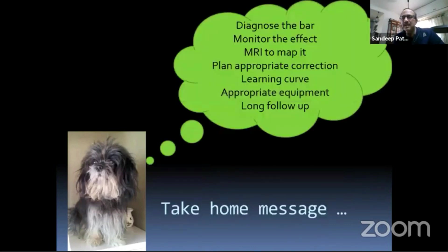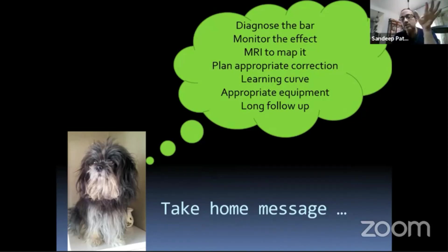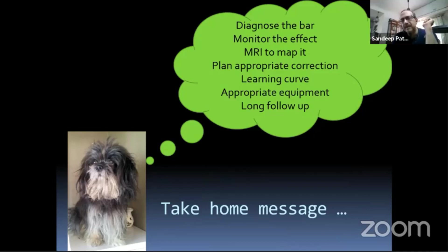The take-home message: know which physeal injury is going to give you a bar; diagnose it, quantify it, and monitor its effect over one to two years to see whether it is causing shortening, tenting, peripheral tethering, change in articular shape, or coronal plane malalignment. Then assess how much growth is remaining, get an MRI, map it correctly, and plan an appropriate correction. There is a learning curve — equipment needed includes an arthroscope, light source, dental mirror, SIAM, and a high-speed burr. Always follow up until complete maturity.